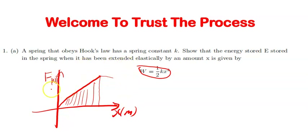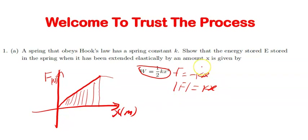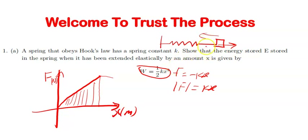The force we are talking about is the restoring force, given by negative kx. Considering the magnitude, the magnitude of the restoring force is just kx. It is negative because at any point, this force is in the opposite direction to the displacement. For example, if the spring is extended in one direction, when you let go, it goes in the opposite direction. The same applies when you compress it.